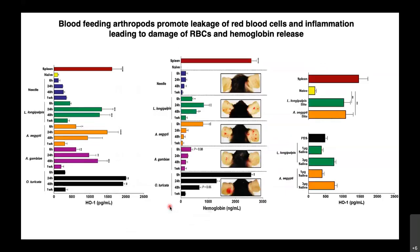To confirm the Western blot data, we collected whole tissue and ran an ELISA, confirming that the peak of HO-1 production ranges from 24 to 40 hours after the bite of all vectors, with poor induction after needle poking. The levels of HO-1 induction correlated with hemoglobin levels rising in the tissue. Interestingly, Aedes aegypti mosquitoes did not promote significant skin hemorrhage, but were still efficient in inducing high levels of heme oxygenase-1.